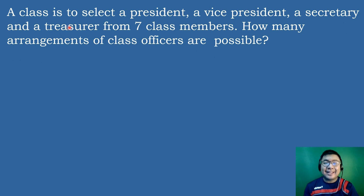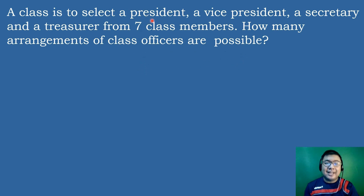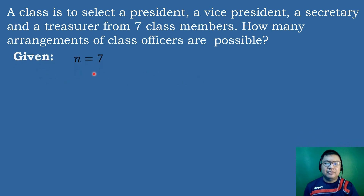Our last example: a class is to select a president, a vice president, a secretary, and a treasurer from 7 class members. How many arrangements of class officers are possible? This situation illustrates permutations because we are selecting specifically for distinct positions. The value of N equals 7 and R equals 4 because there are 4 positions.